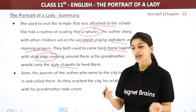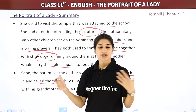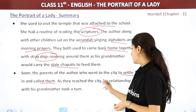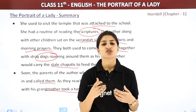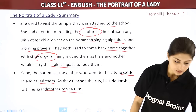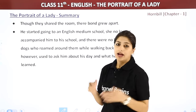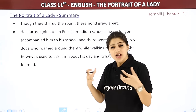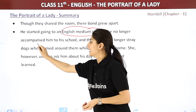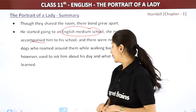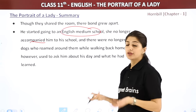The parents of the author had gone to the city, settled, and called for them. As they reached the city, the relationship between the author and the grandmother took a turning point. Though they shared the same room, their bond grew apart. He started going to an English medium school and no longer accompanied his grandmother. There were no longer stray dogs roaming the road, because this was the city.